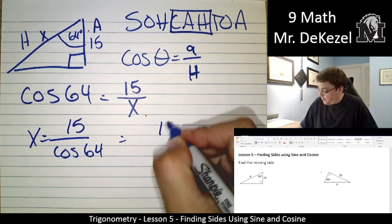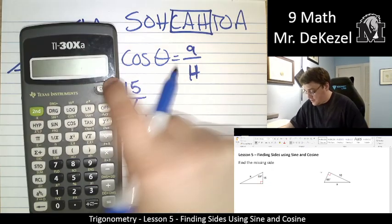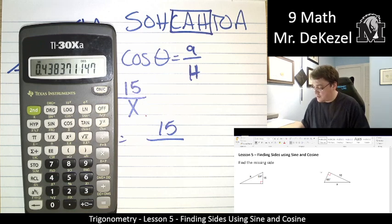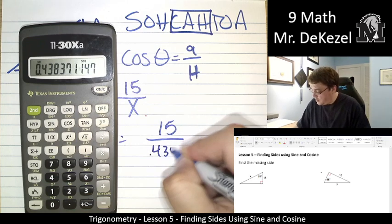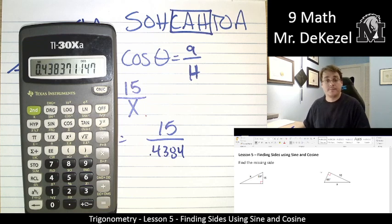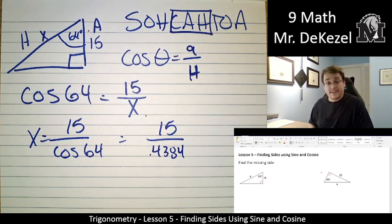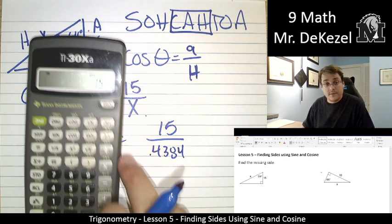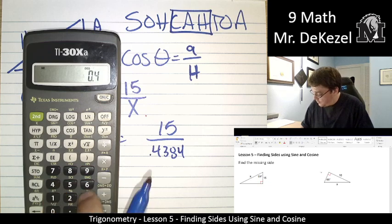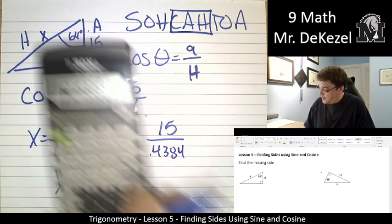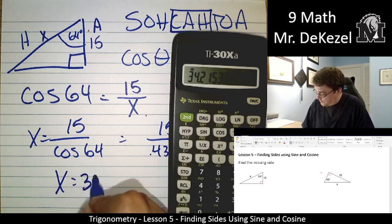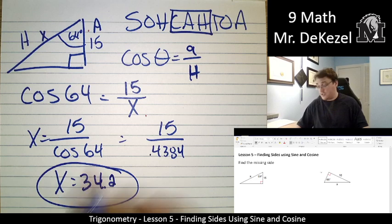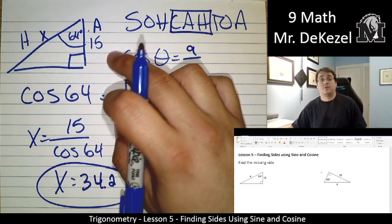Let's go ahead and find out what the cosine of 64 is. 64 cosine, that's 0.438, and then we round that last one up to 4. So now we're going to be able to find out what X is. X is equal to 15 divided by 0.4384. That's 34.2. Okay, our hypotenuse should be our longest side, so it's longer than this one. That is good, that is what we want.